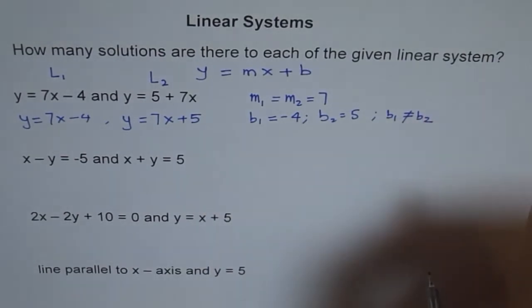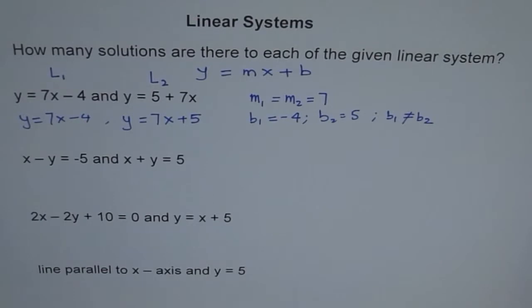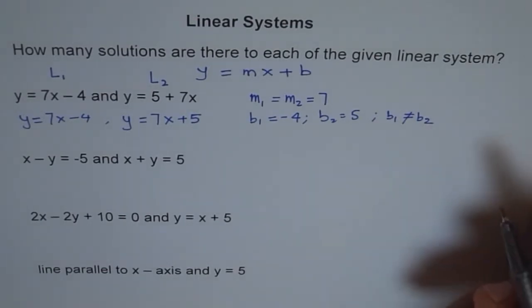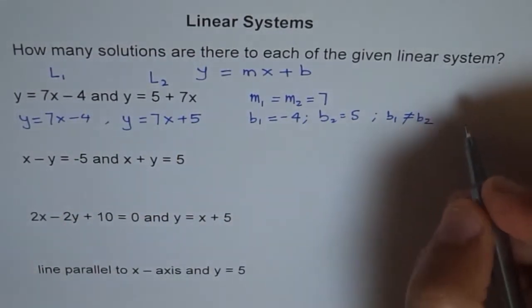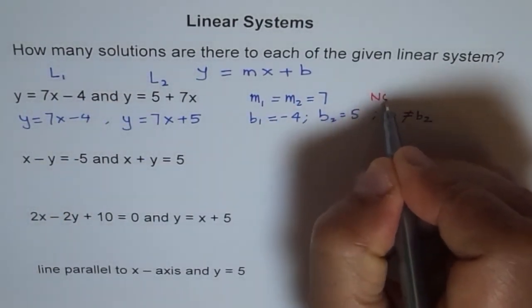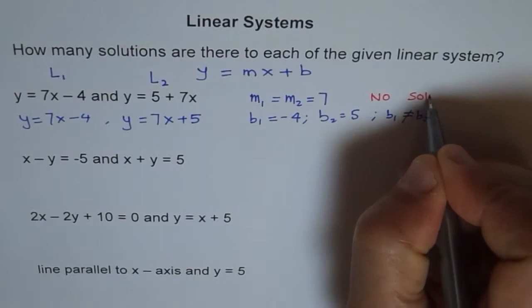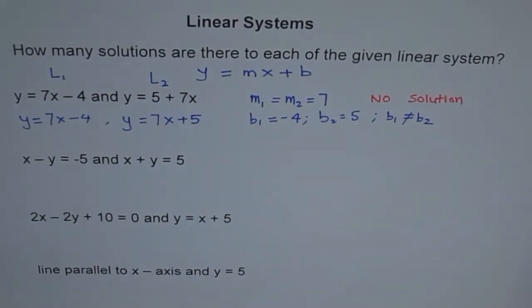So under this condition, what should be or how many should be the solutions? Can you tell me? Yes. The lines are parallel and they are not coincident. They are parallel and they have different y-intercept. Therefore, we have no solutions. So how many solutions? We will say no solution. And condition, you can see as the slopes are same but y-intercepts are different.